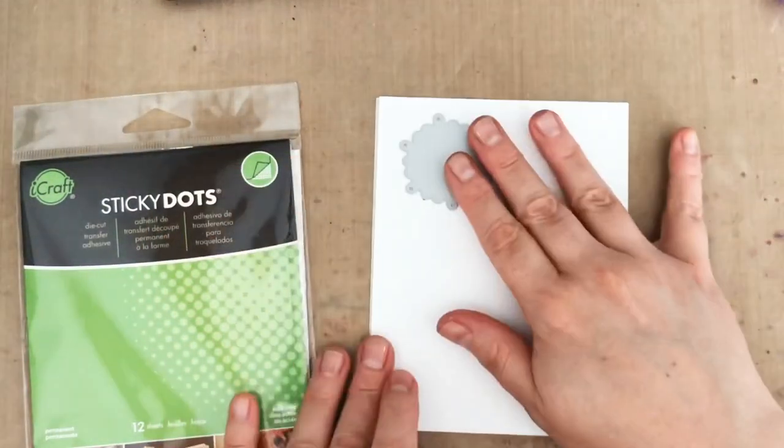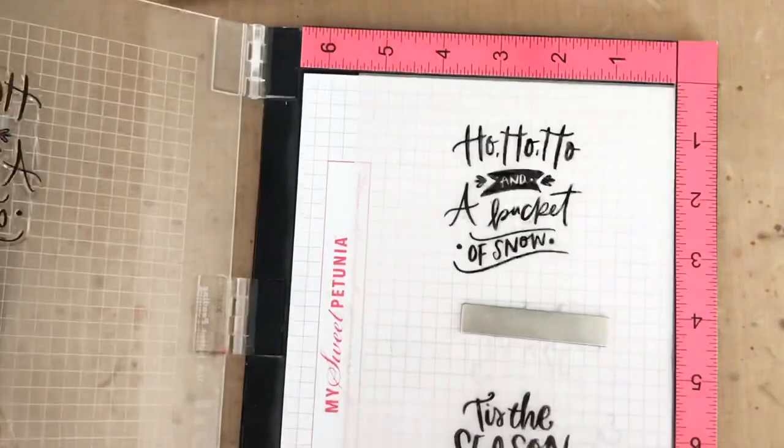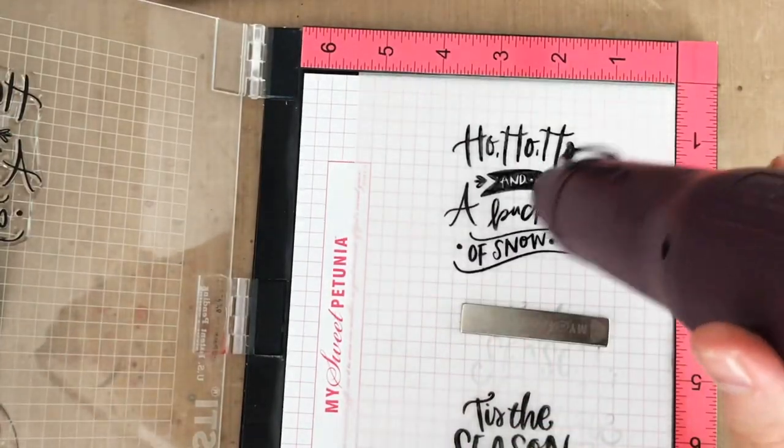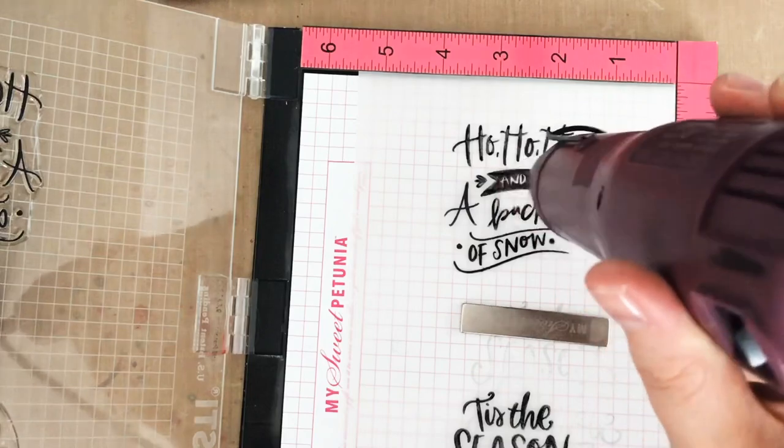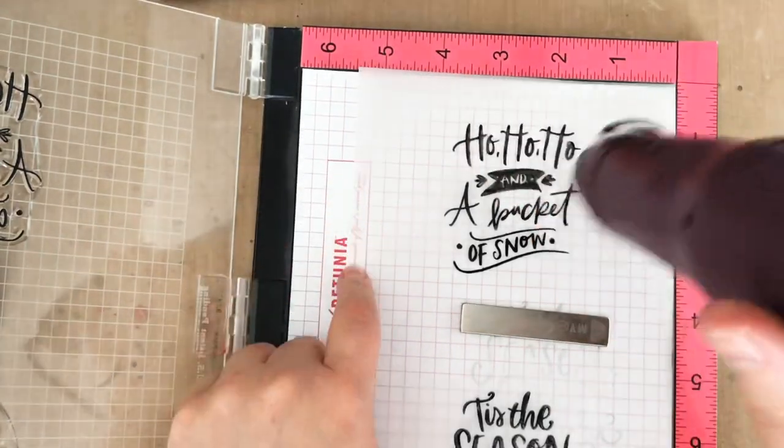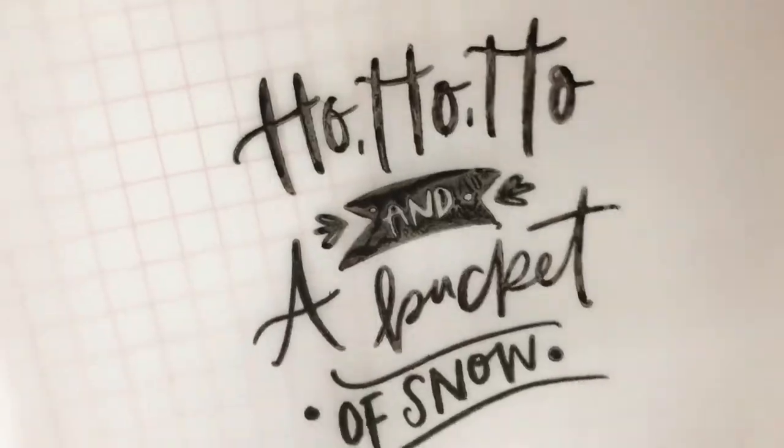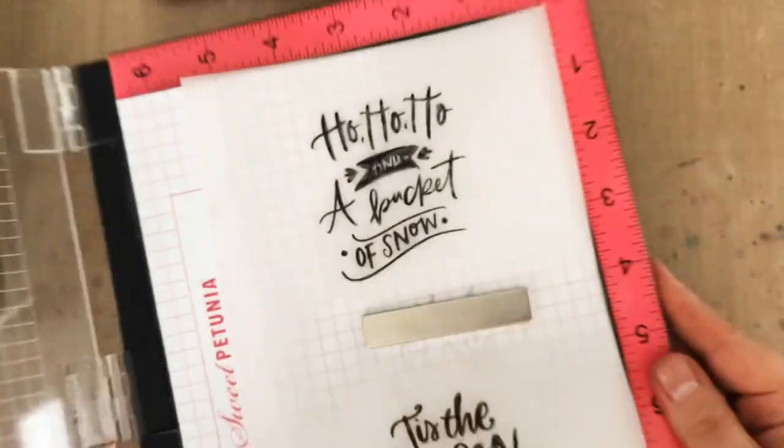Now to add sentiments, I'm going to stamp the gorgeous Season of Sparkle sentiments on vellum, heat set, and die cut. Heat setting will make that ink permanent on the slick vellum surface, and the vellum will kind of mute that glitter background just enough for the sentiments to stand out.